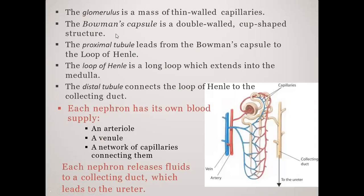The glomerulus is a mass of thin-walled capillaries enclosed in a double-walled cup-shaped structure. The proximal convoluted tubule leads from the capsule, and the U-shaped loop extends into the medulla. The distal tubule connects to the collecting duct. Each nephron releases fluid to the collecting duct, which leads to the ureter.